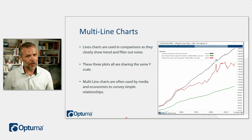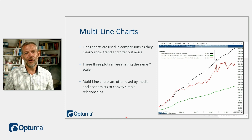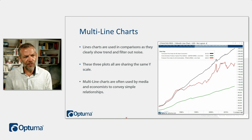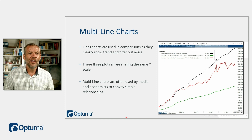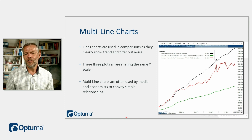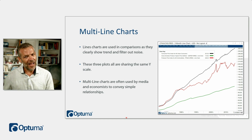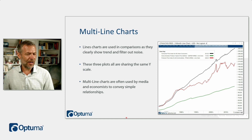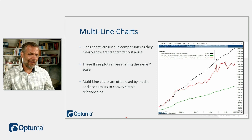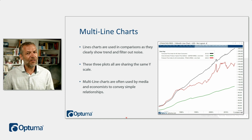With multi-line charts, we often want to compare trends of related data sets. We have this example of the Consumer Price Index, the Gross Domestic Product, and the Producer Price Index — all economic indicators that give us a feel for how the economic outlook looks at the moment. In CMT Level 3 we go a lot further and actually create models and sector rotation based on economic indicators.